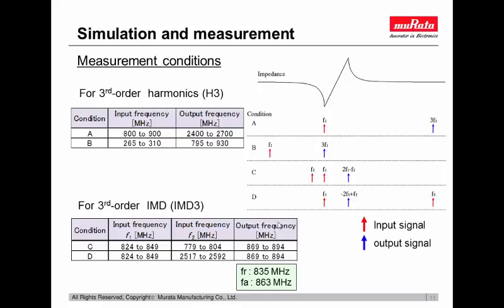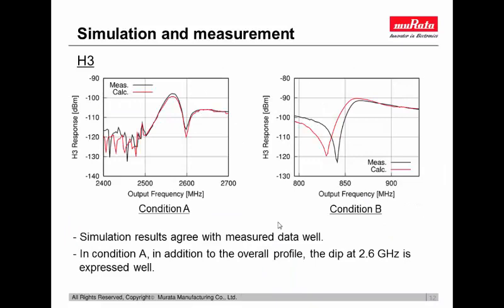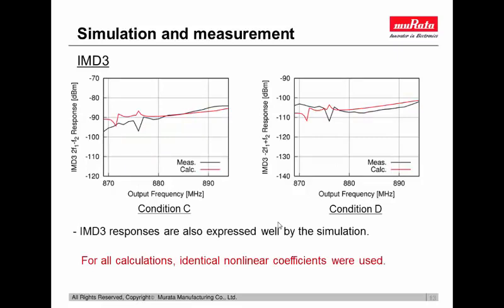Now I show you the simulated and measured data in each condition. These figures show the simulated and measured third-order harmonics responses in conditions A and B. Simulation results agree well with measured data. In particular, in the left side figure in condition A, the overall profile and the dip at approximately 2.6 GHz are expressed well by simulation. These figures also show the simulated and measured data of IMD3 responses in driving conditions C and D. As with H3 responses, IMD3 responses are expressed well by simulation.